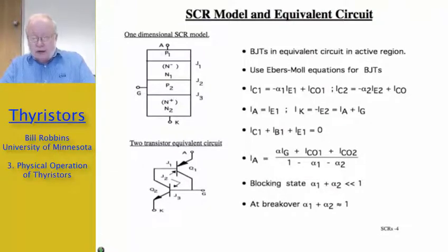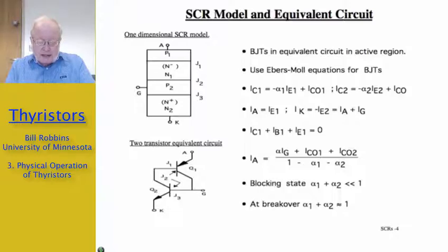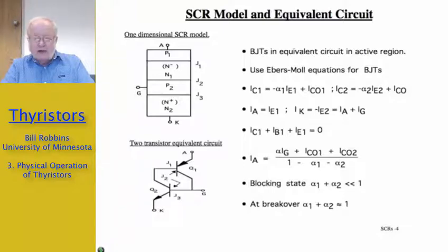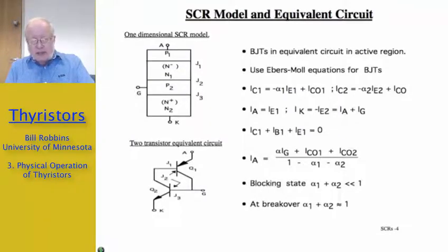In the forward blocking state, these transistors are technically in the active region, though they're conducting only very small currents. They're in the active region because the emitter-base junction of the PNP is forward biased, the junction J3 — the base-emitter junction of the NPN — is forward biased, and the common J2 junction, which functions as the collector-base junction, is reverse biased. This forward blocking state is a stable state for these two transistors, even though they're technically in the active region, because their current gains are very small — their so-called base transport factors, alpha, are much less than unity. If these transistors were good transistors with betas greater than one, this would be an unstable mode of operation, and the slightest perturbation would either push them into cutoff or into saturation.